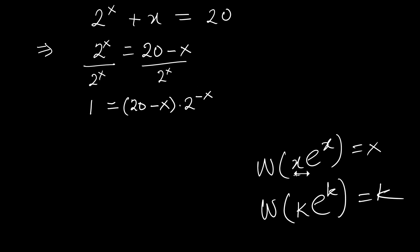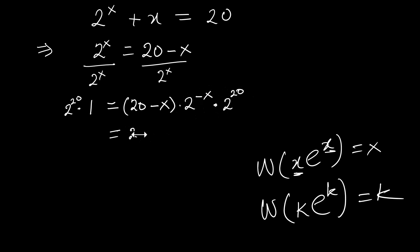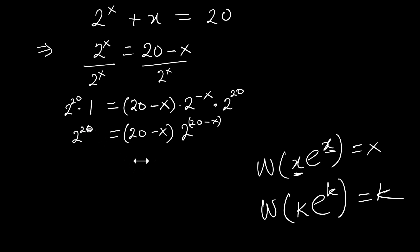I want to make this expression match the Lambert W form, so the base and the power need to be equal. To do that, I'll multiply both sides by 2 raised to 20. On the left we get 2 raised to 20, and since we're multiplying, we can add the exponents: 2 raised to (20 minus X).